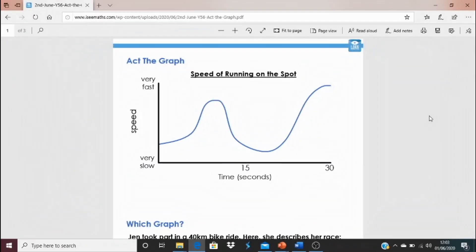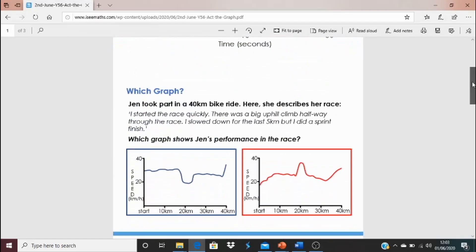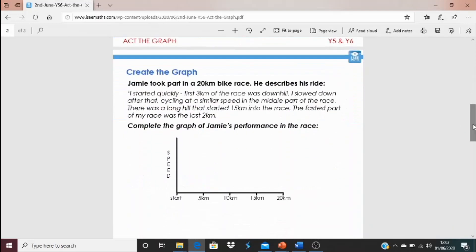Okay, so for today's task we've got a bit of a mix of different things here. The first question is an act the graph one. So here we go, speed of running on the spot. It's over 30 seconds. See if you can act this as accurately as you can from running on the spot very slowly to very fast, just like the line graph shows. The next question is which graph. So here, Jen describes her performance in a bike race. Now which graph represents this performance—is it the blue one or is it the red one? How do you know? And the last question says create the graph. So we've got Jamie and his story of his race. Can you approximately draw the line graph that represents this description?